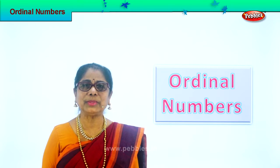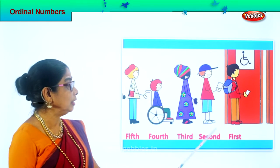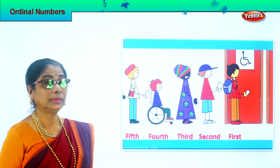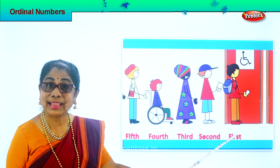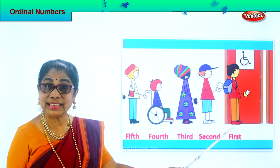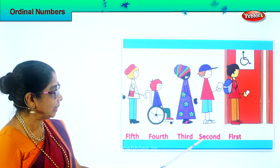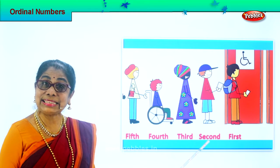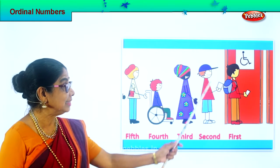Let's recall the ordinal numbers we've already learned. Look at the queue here. You're getting into the door and that's the first person. How do you spell first? F-I-R-S-T. First. I am first — I have to go into the door, into the room first. Look at the second one here. First person, second. Spell second: S-E-C-O-N-D. Second. So this is the second person.